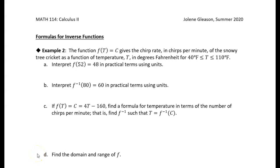All right, so in this next example, we've got a function f of t that gives the chirp rate for the snowy tree cricket in terms of the temperature t in degrees Fahrenheit. And we're told that this function holds for temperatures between 40 and 110 degrees Fahrenheit. The first thing we want to do is interpret what f of 52 equals 48 means in practical terms — what is that telling us?